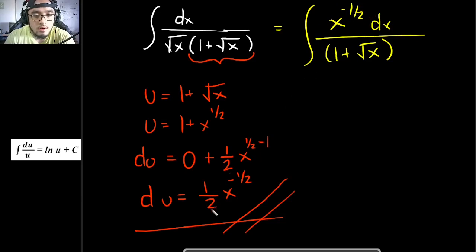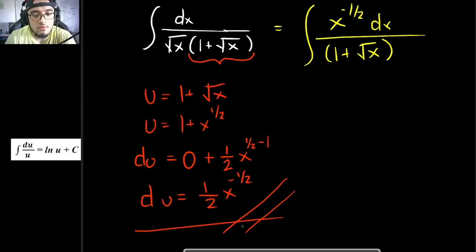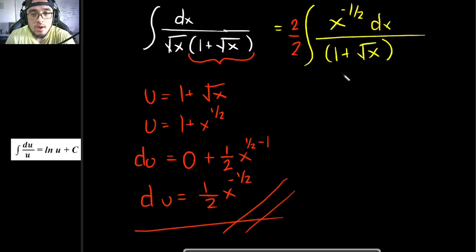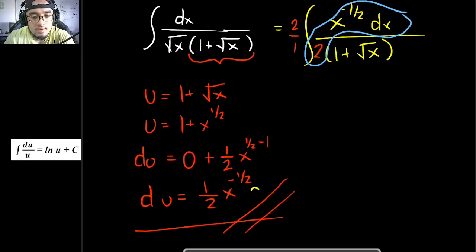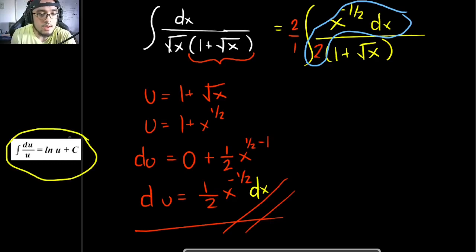The expression is similar to our du, but we are missing the factor of 1 half. So we multiply by the identity 2 over 2, moving the 2 inside the integral, giving us 1 half times 2 times x raised to negative 1 half dx. This now matches the du format exactly. We can now apply the logarithm formula.